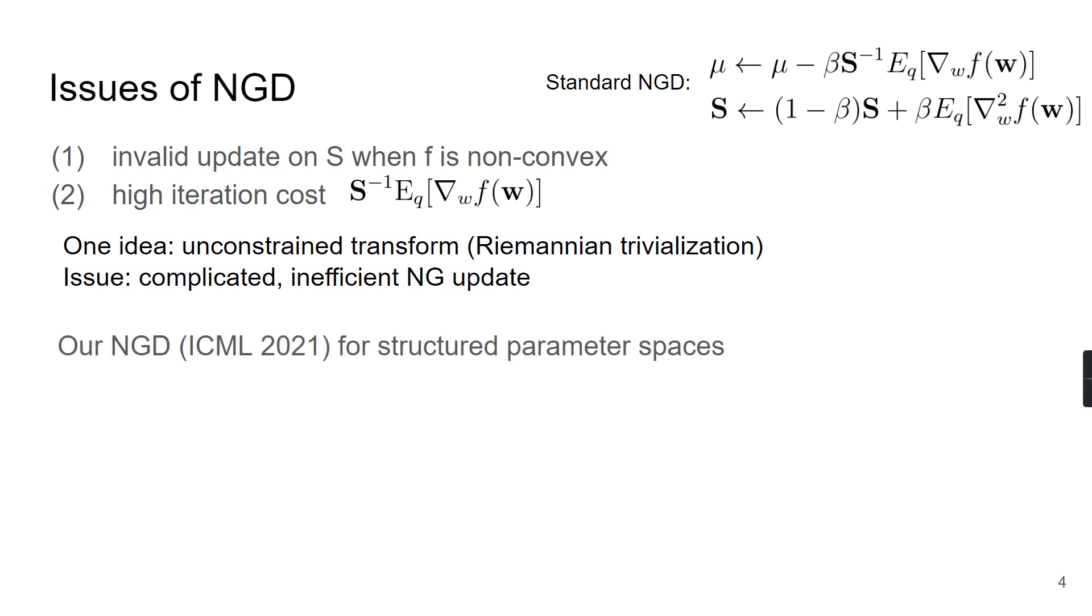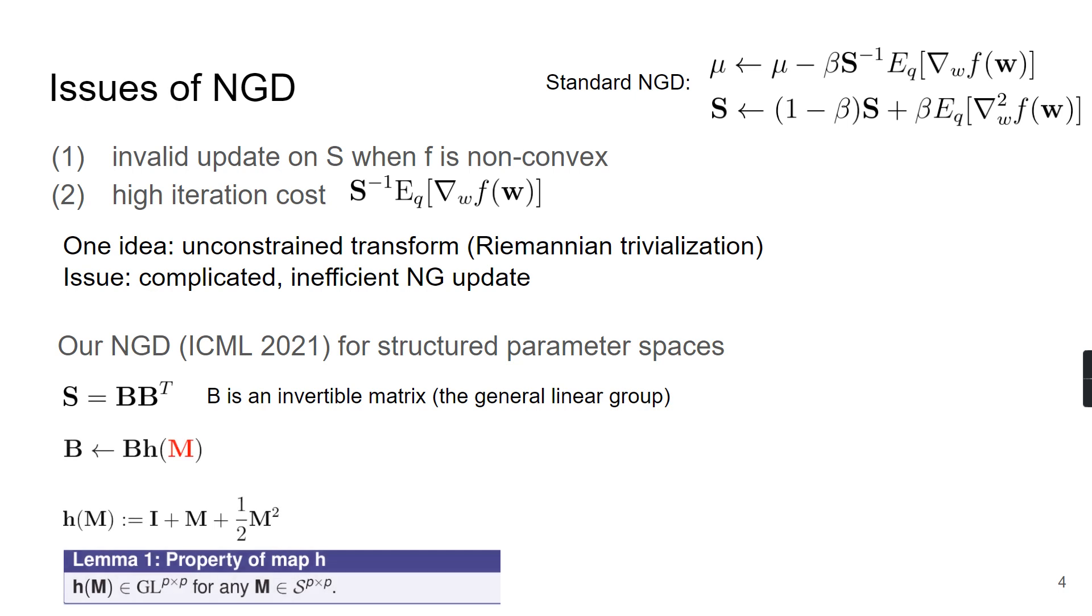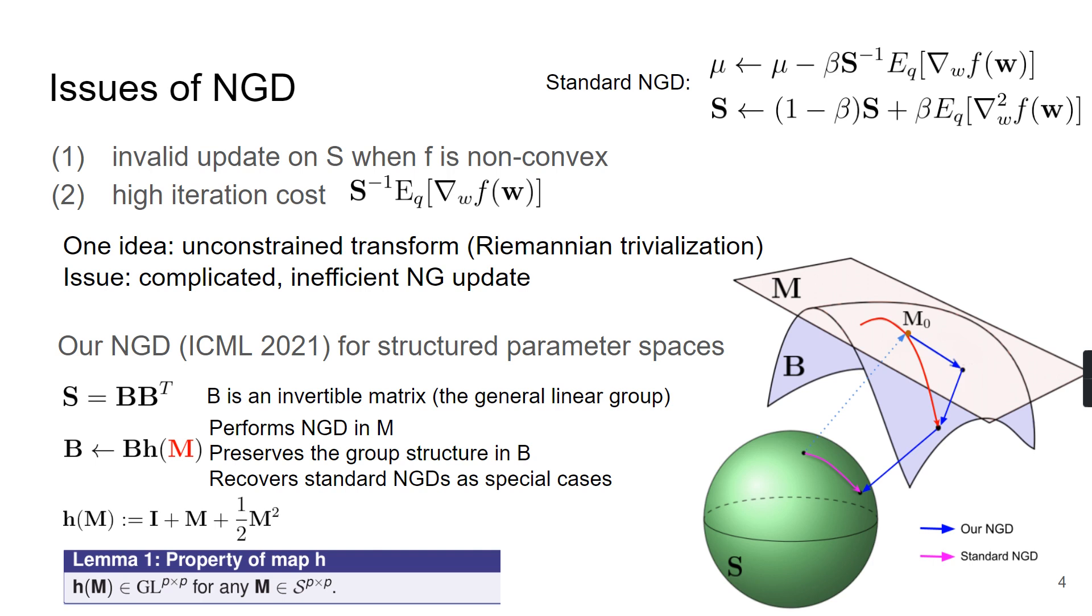In our ICML work, we propose a new natural gradient update for structured parameter spaces. Here, the precision S can be expressed as a matrix product between B and B transpose, and B is an invertible matrix. Note that B lives in the general linear group space. We introduce a local parameter M so that we can perform natural gradient descent in the M space while preserving the group structures in the B space, thanks to Lemma 1. And as shown in the figure on the right, the key difference between our natural gradient descent and the standard natural gradient descent is that we can easily encode structures in the B space. The reason is that we decouple the structure-preserving steps from the standard natural gradient update.